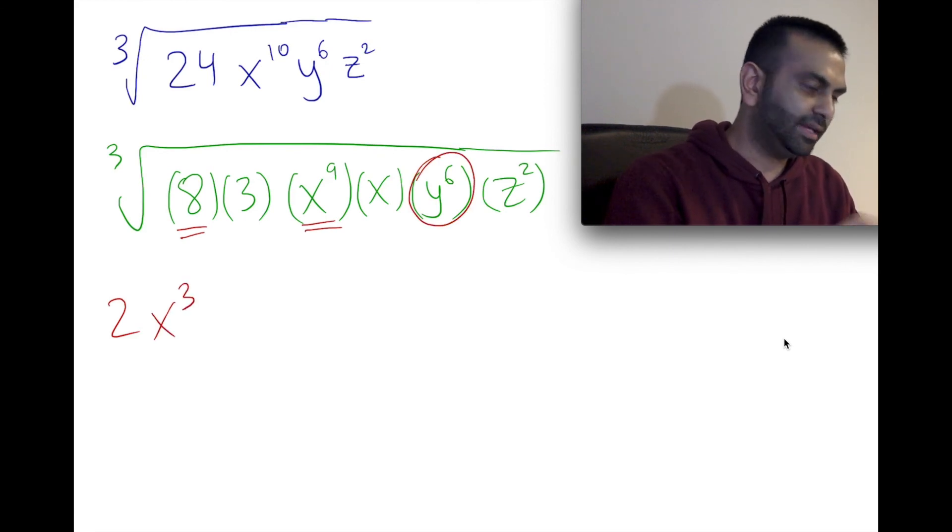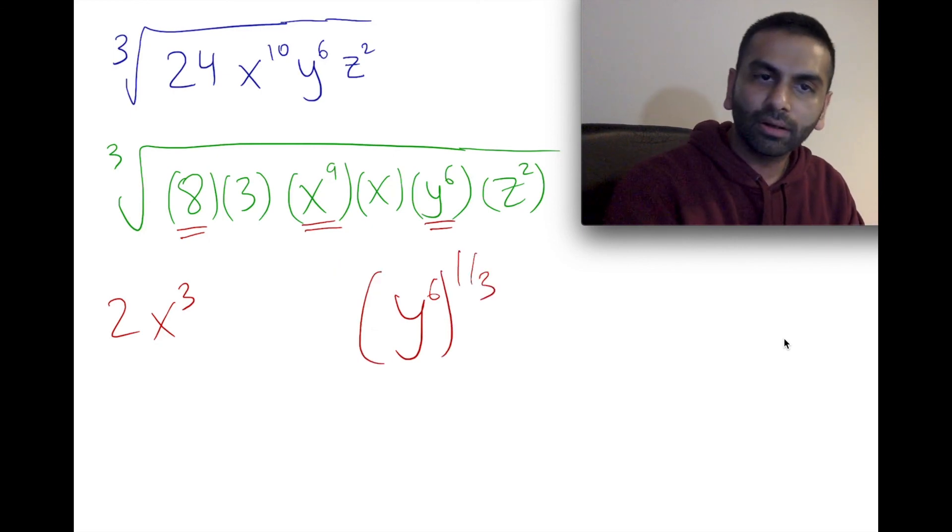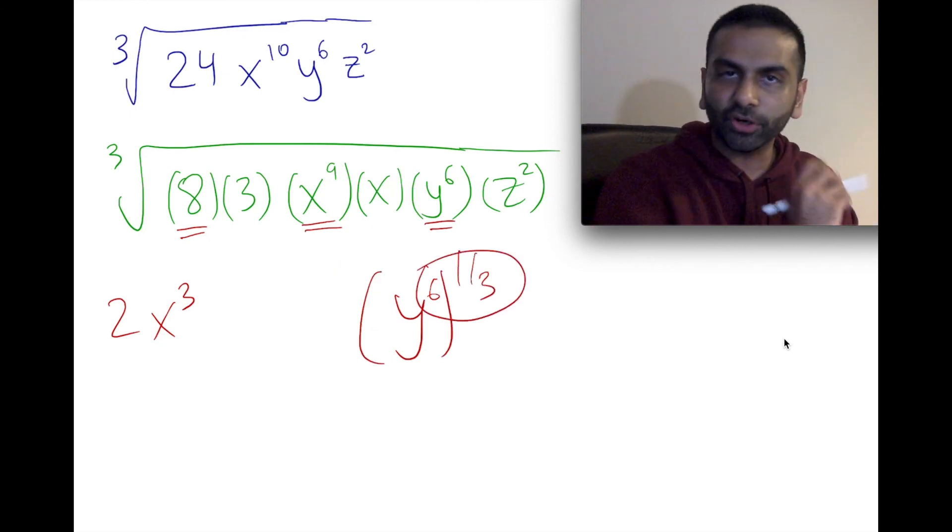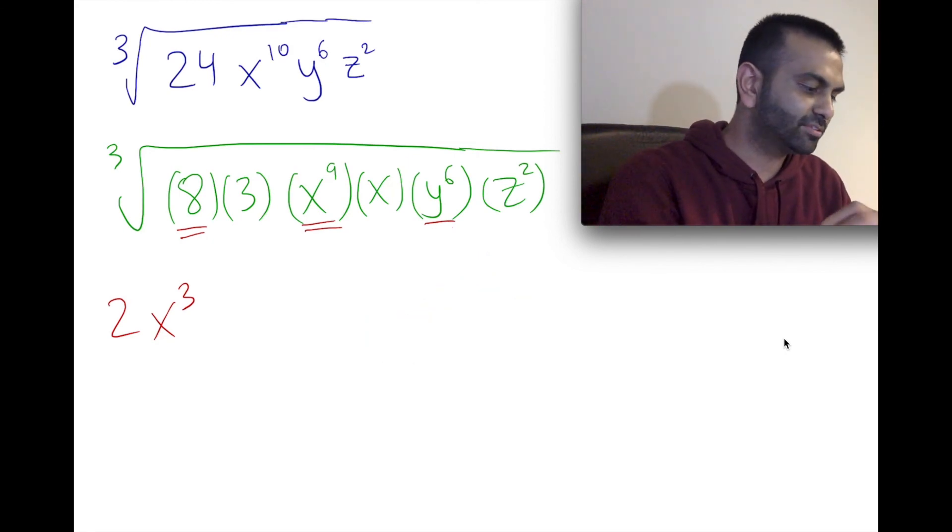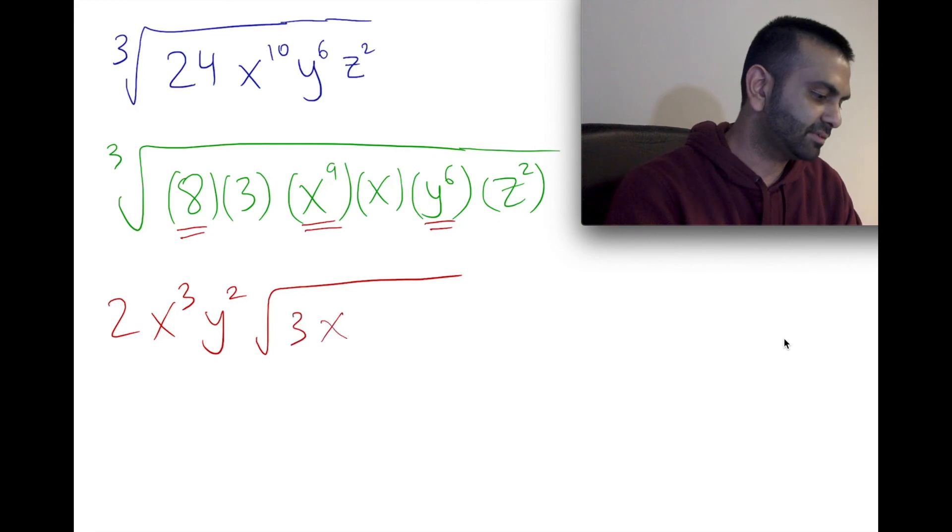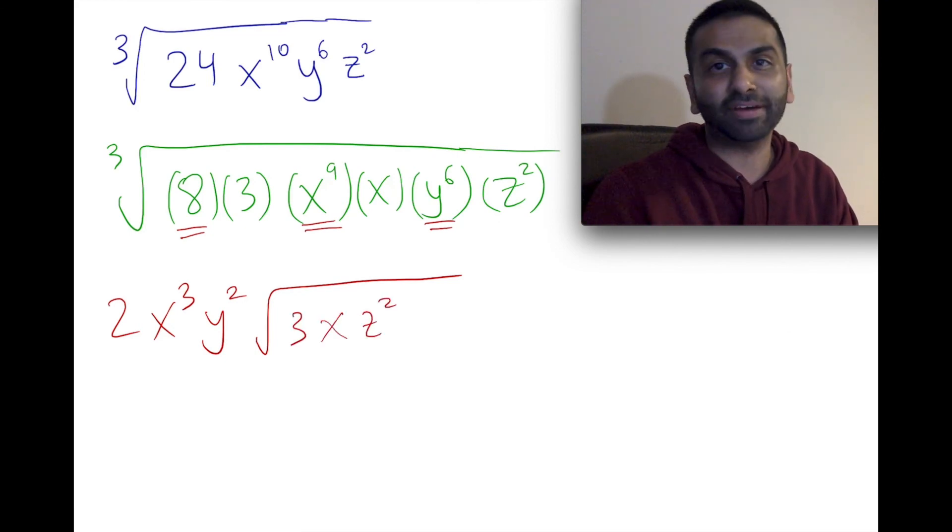And similarly here, we're going to pull this out as well. Again, that's y to the sixth, and it's really the cube root of that, which is the same thing as saying to the one-third power, which means you multiply 6 times a third, and that's 2. So it's really y squared that we can pull out of this guy. So that comes out as y squared. And then you're finally just left with all the things on the inside that we didn't underline: the 3, the x, and the z squared. So that's 3xz squared. And that's how you simplify that.